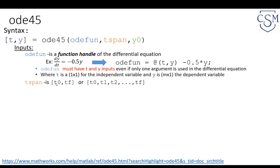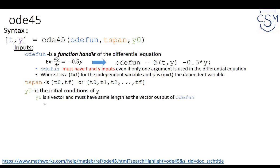The input TSPAN, at minimum, needs to be your initial time and the final time at which you'd like to solve the differential equation. Alternatively, you can give it different time points between T0 and Tfinal. Y0 is the initial condition because ODE45 is a numerical method for solving initial value problems, so you must give it an initial value of Y. Y is a vector and it must have the same length as the output of the ODE function.